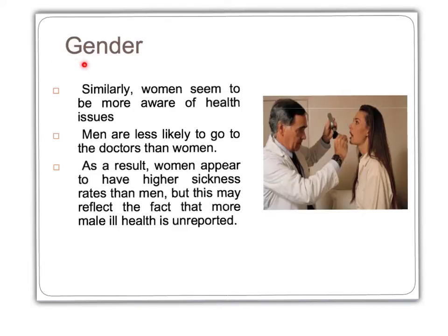Sociologists have also recognised gender inequalities in health. Women seem to be more aware of health and are more likely to go to the doctor, while men are less likely, meaning women appear to have higher sickness rates than men — though this may reflect the fact that more male ill health goes unreported. Women live longer than men but report more illness, and because they live longer, women are more likely to suffer from chronic illness, which partly explains why two-thirds of the disabled population are women.